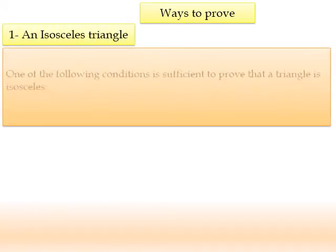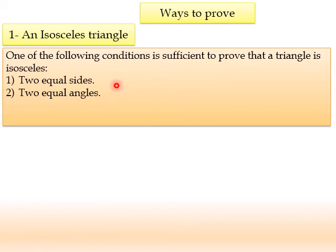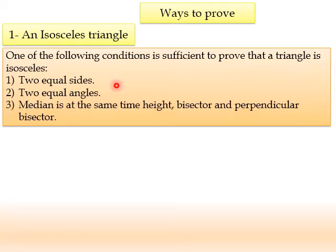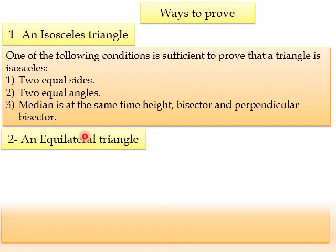Ways to prove. How to prove an isosceles triangle? One of the following conditions is sufficient to prove that a triangle is isosceles. As a definition, an isosceles triangle has two equal sides, two equal angles, and the base angles. The median issued from the main vertex is at the same time a height, bisector, and perpendicular bisector. So if we have two equal sides, two equal angles, or we proved that the median is at the same time a height, bisector, or perpendicular bisector, we can conclude that our triangle is isosceles.